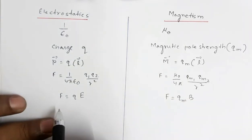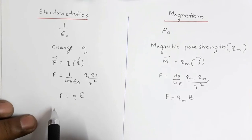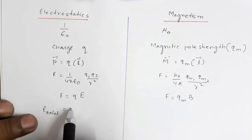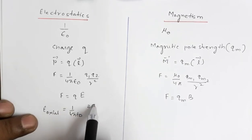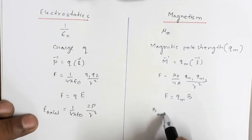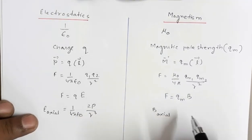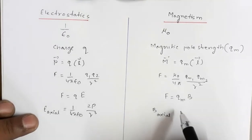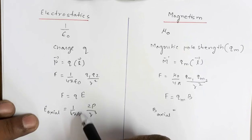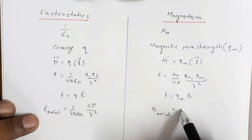The electric field along the axial line of an electric dipole is E_axial = (1/4πε₀) × 2P/r³. The magnetic field along the axial line of a magnetic dipole replaces 1/4πε₀ with μ₀/4π, giving B_axial = (μ₀/4π) × 2M/r³.